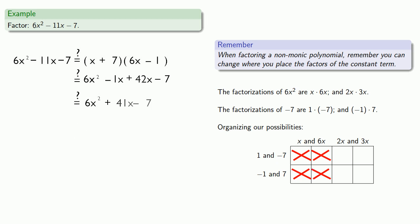So we have to move on to the next possibilities for 6x². That's 2x and 3x. So again, we'll try our first factorization for the constant: 2x plus 1 and 3x minus 7.